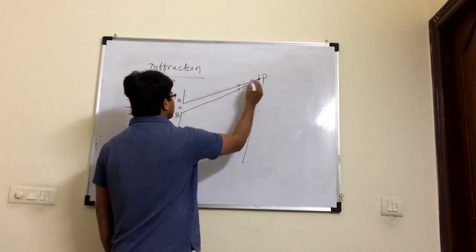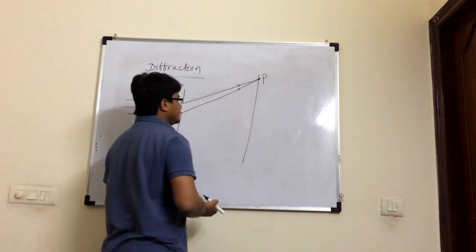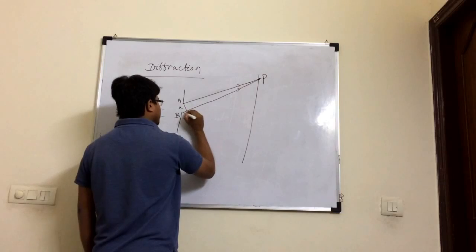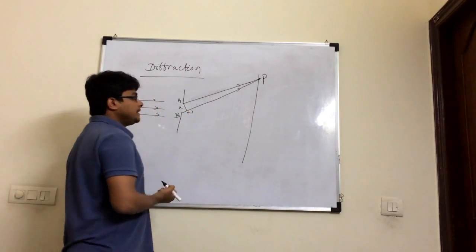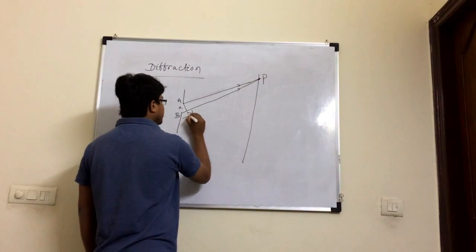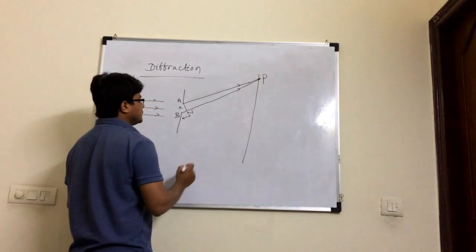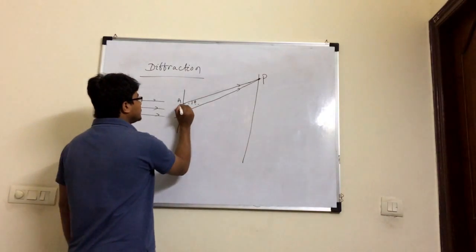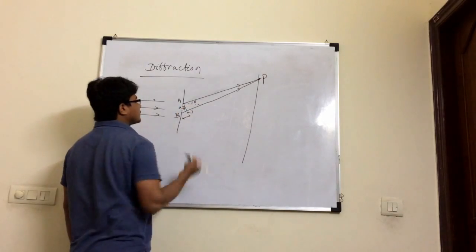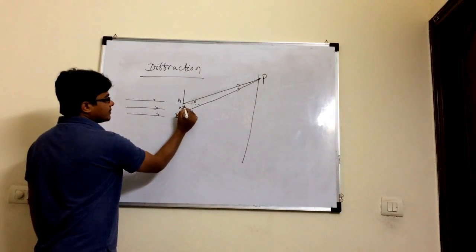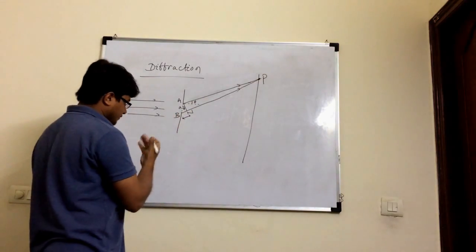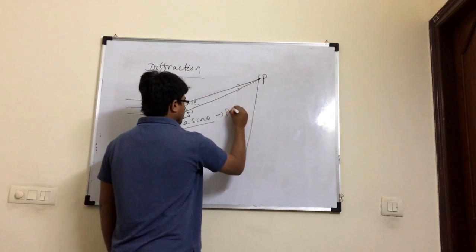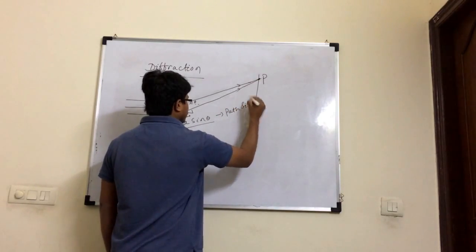The phase difference between rays AP and BP will decide the intensity at point P. To find the path difference, we need to see what extra path is traveled by BP compared to AP. BN is the extra path difference. If theta is the angle of diffraction, then using simple trigonometry, BN equals A sin theta. This A sin theta is the path difference between BP and AP.